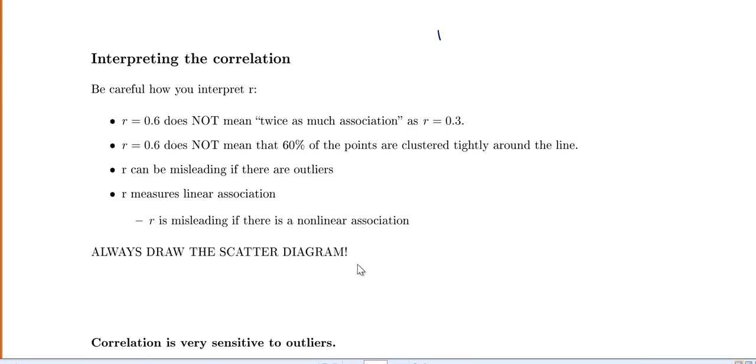Keep in mind also that your correlation can be misleading if there's outliers. And R only measures linear association. So a computer will still give you a correlation value for a curved relationship but it doesn't actually mean anything.